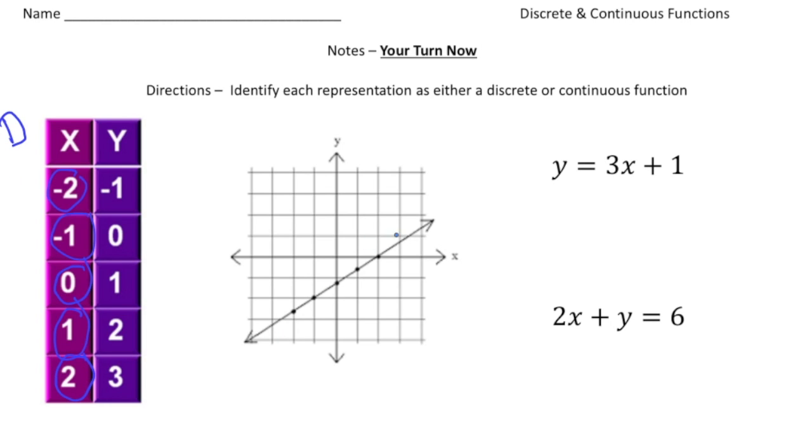This next one is linear. And notice there's arrows going both directions, which means this is going to be a continuous function. The next one, we have an equation. And notice this is written in slope-intercept form. And that's a sign that it's going to be continuous. And the last one, 2x plus y equals 6. Well, we could transform this to write it in slope-intercept form. So this is now going to be y equals negative 2x plus 6. And because it's in slope-intercept form, we know it's going to be continuous. How'd you do?